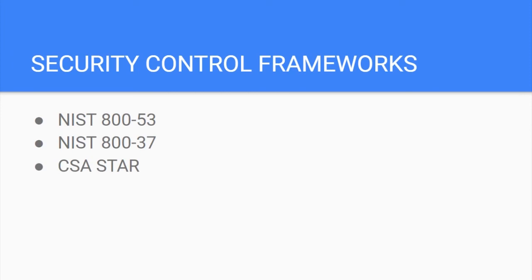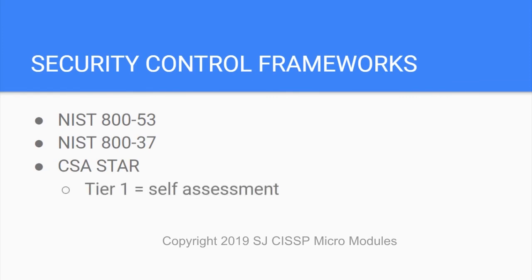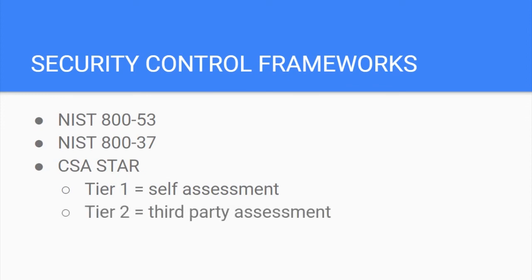CSA STAR stands for the Cloud Security Alliance, which publishes standards for cloud security. Tier 1 has participants self-assess by filling out a questionnaire. Tier 2 is a third-party assessment, and Tier 3 is continuous monitoring by a certified independent organization. The source notes that Tier 3 is currently in draft format.